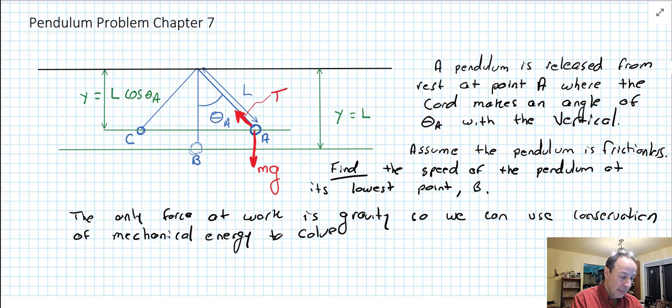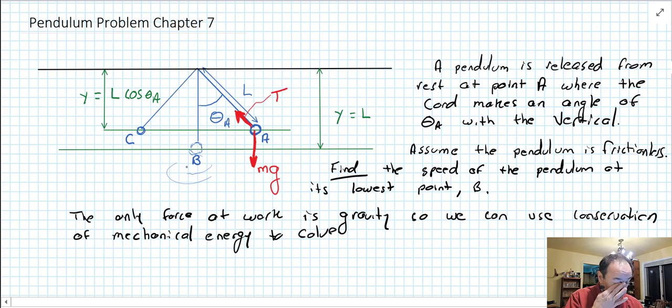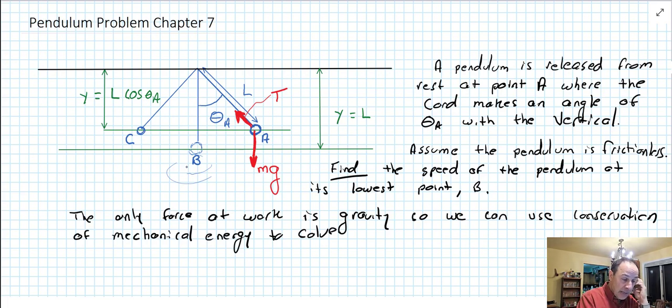We're going to assume the pendulum is frictionless and we want to find the speed of the pendulum at the lowest point B. That's when the lowest point is when the cord is perfectly vertical.